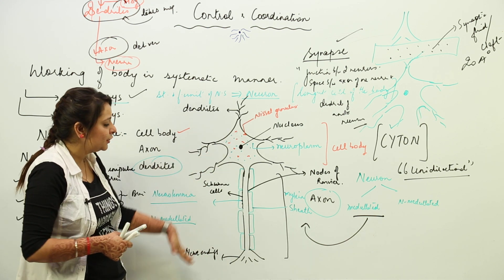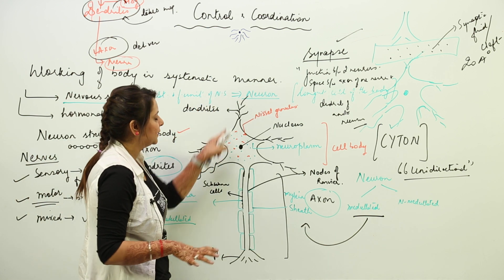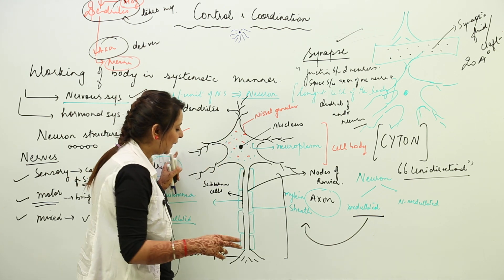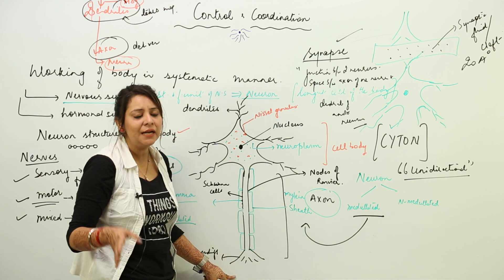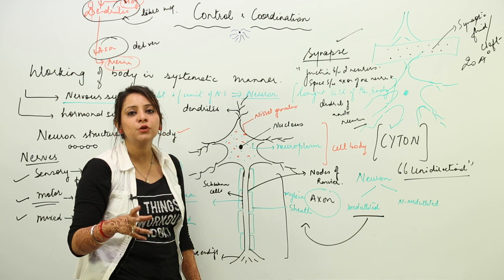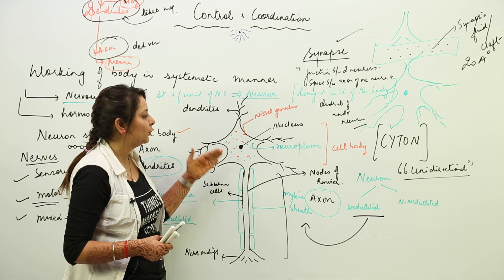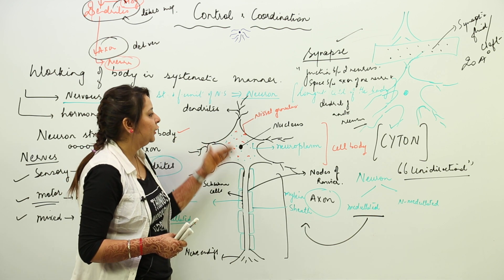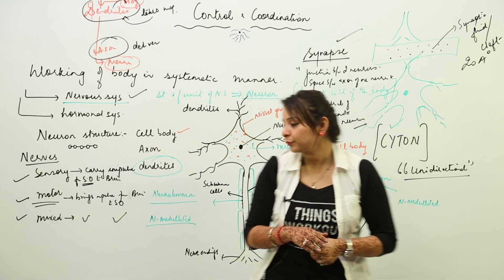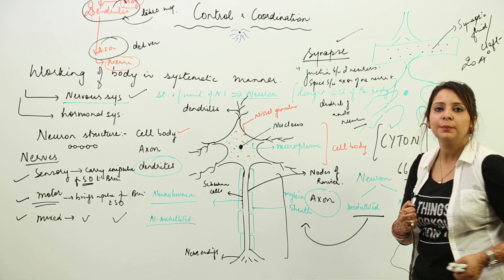Because dendrites are present only at one end of the neuron, the impulse can only be received from that side. It cannot be taken from the lower side since there are no dendrites there. This confirms that the flow of impulse in a neuron is unidirectional, because dendrites are present only at one end.